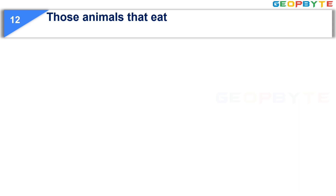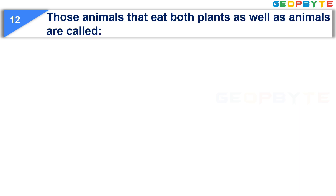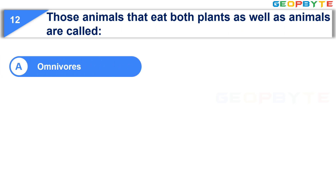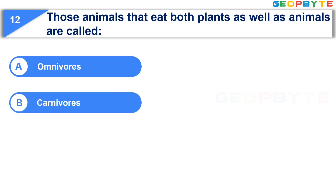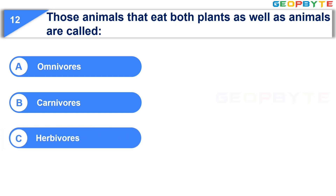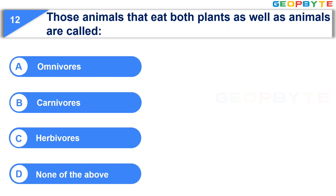Those animals that eat both plants as well as animals are called: Option A, Omnivorous. Option B, Carnivorous. Option C, Herbivorous. Option D, None of these. Your time starts now.